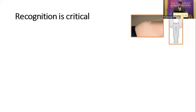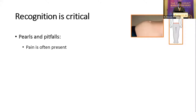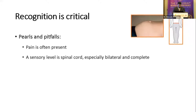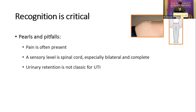The classic textbook triad of myelopathy is weakness, sensory loss with truncal sensory level, and sphincter dysfunction. However, some myelopathic syndromes can present with other findings. Pain is often present. Sensory level is pathognomonic for spinal cord, especially if bilateral and complete. If unilateral or incomplete, there are other possible localizations. Urinary retention should make you think of spinal cord injury unless proven otherwise. Many times in the ER, patients are dismissed as UTI and sent home with a Foley catheter and antibiotics.